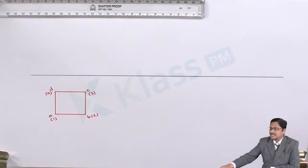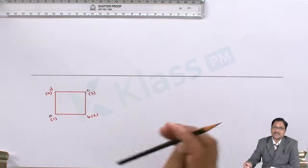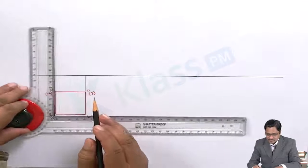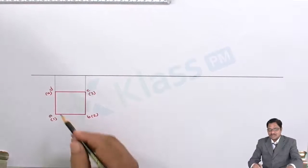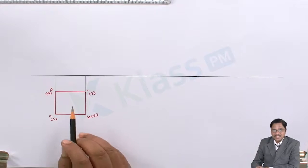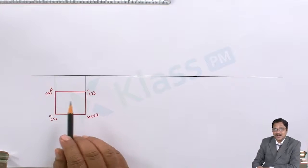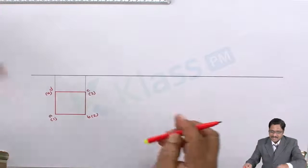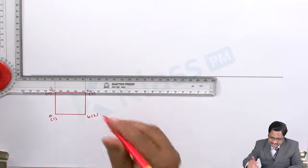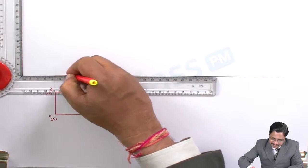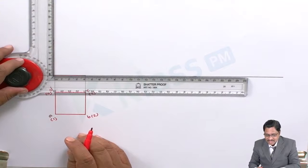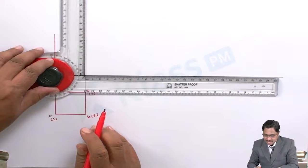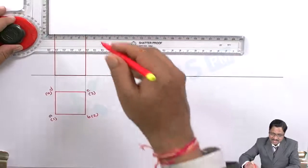To get the corresponding front view, draw projectors — the front view and top view share the same length. Since it is resting with an edge, the base should be on the XY line to satisfy the resting-in-HP condition. Draw the height of the prism, which is 70 mm, on either side from the base edge, then close the top side to complete the front view rectangle.